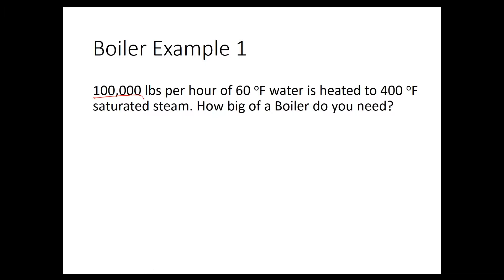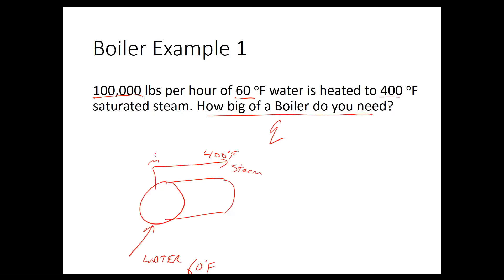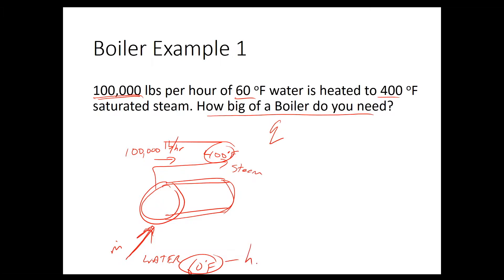Here's boiler example number one: 100,000 pounds per hour of 60°F water is heated to 400°F saturated steam. The question is how big a boiler do you need — what Q is required? Water comes into the boiler at 60°F at 100,000 pounds per hour and exits as 400°F steam, with input flow rate matching output. The real question is: what are the initial and final enthalpies? Our equation is Q equals ṁ times ΔH.